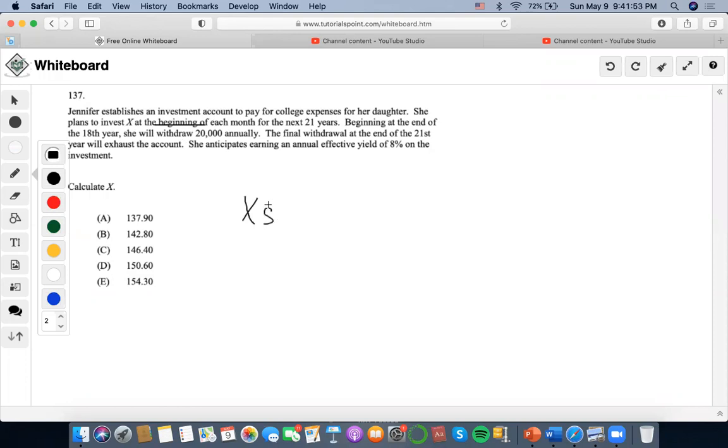Investing at the beginning of each month for 21 years means the number of periods is 21 times 12, which equals 252 months.